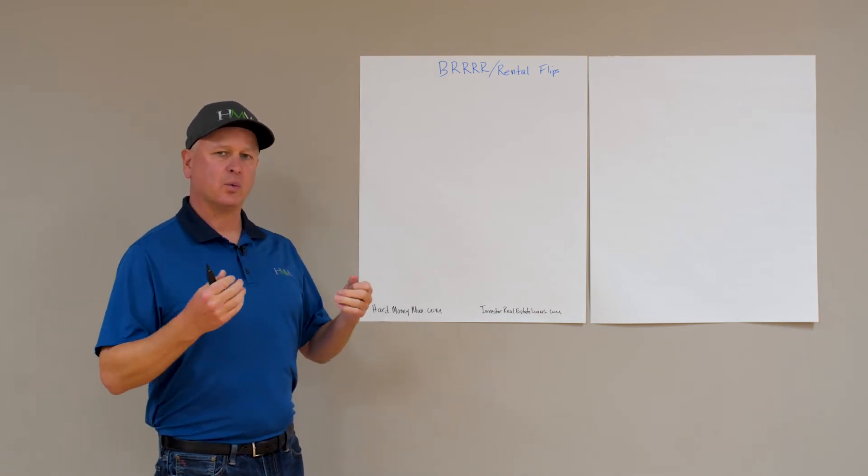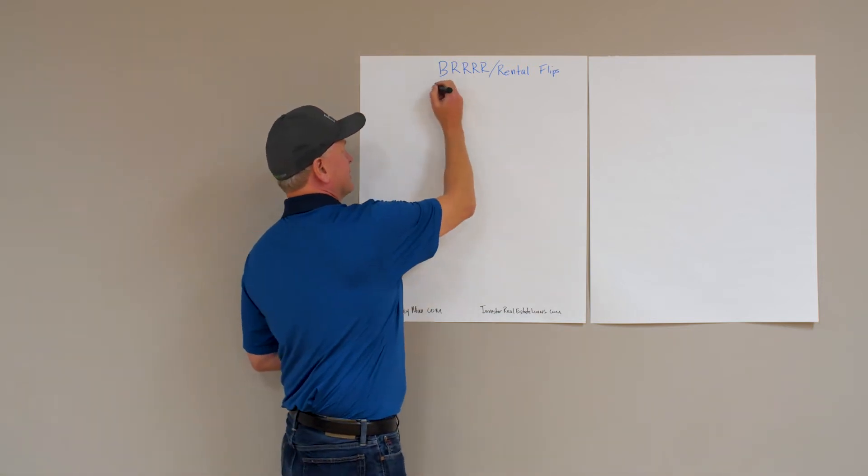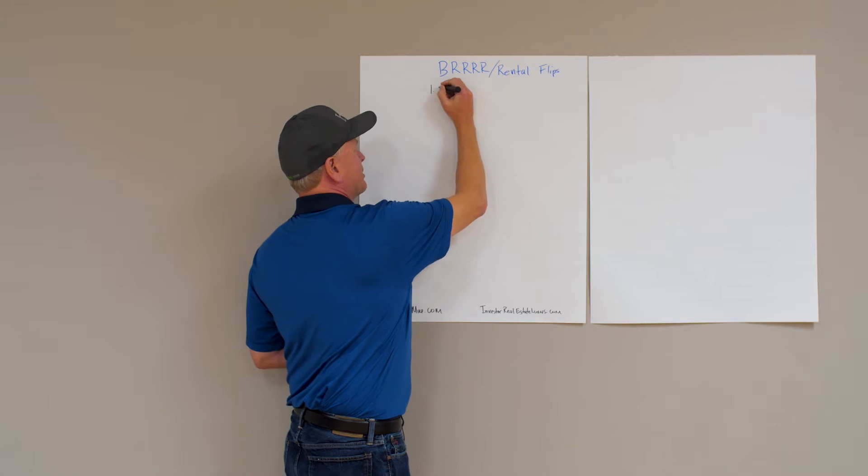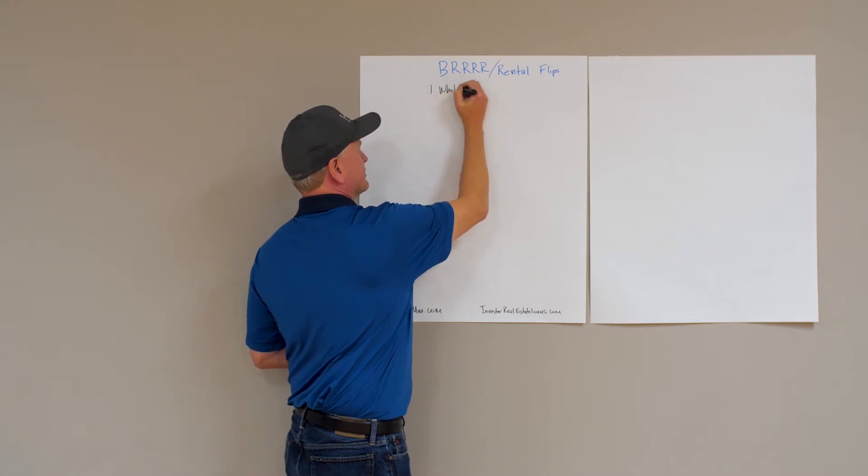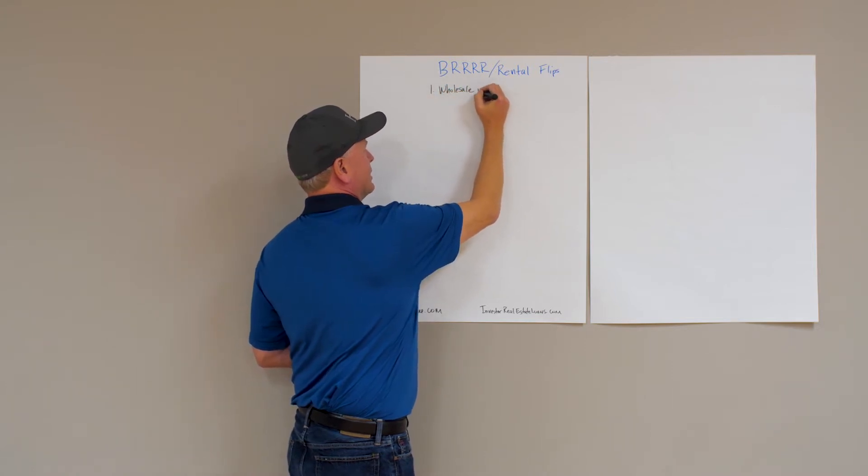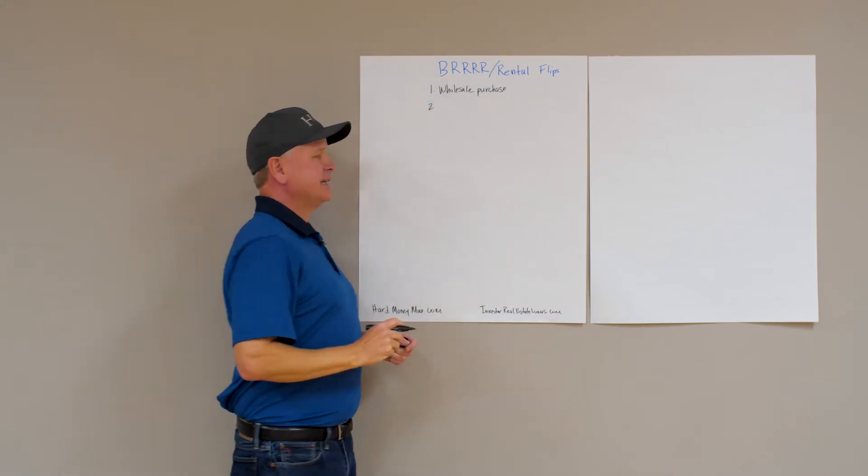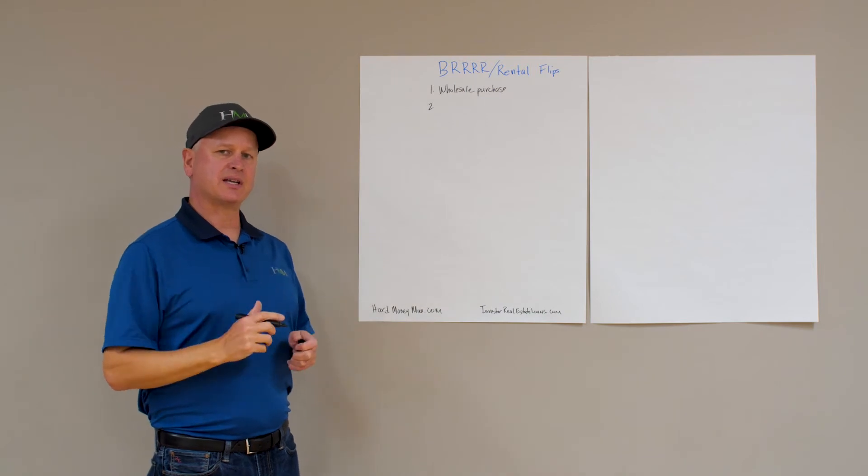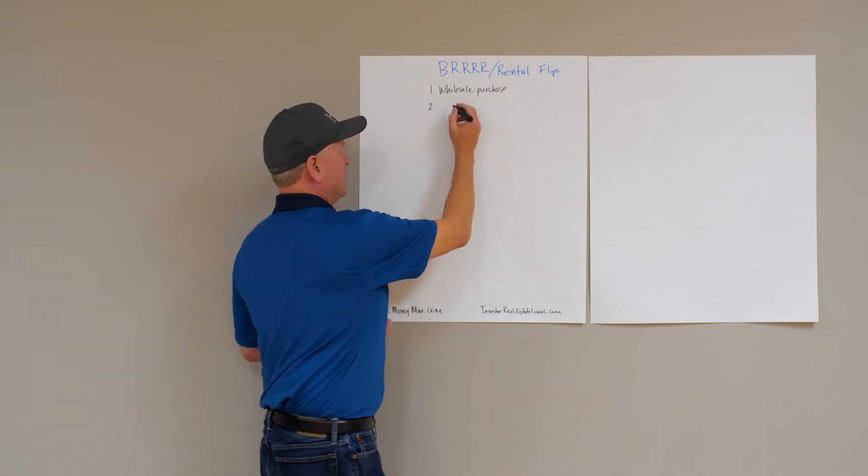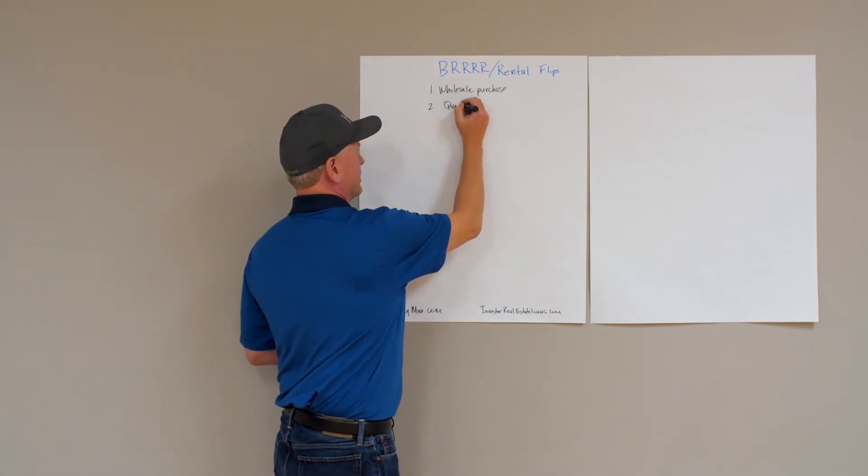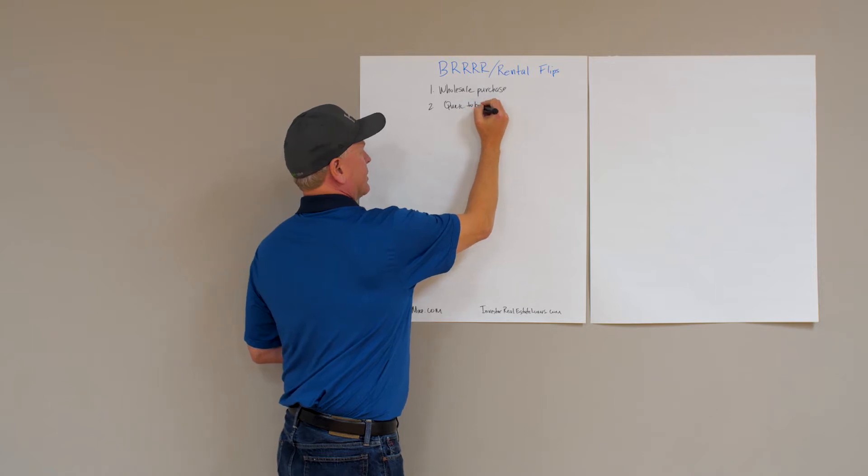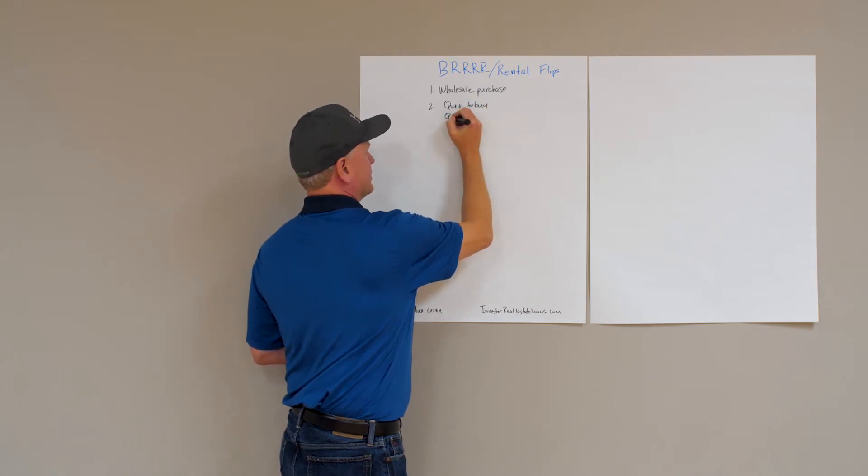If we remember, there are two pillars. Number one, you've got to buy properties at wholesale. And number two, you've got to have the correct two-step loan program. We call it quick to buy and quick to refi, our two-step loan program.